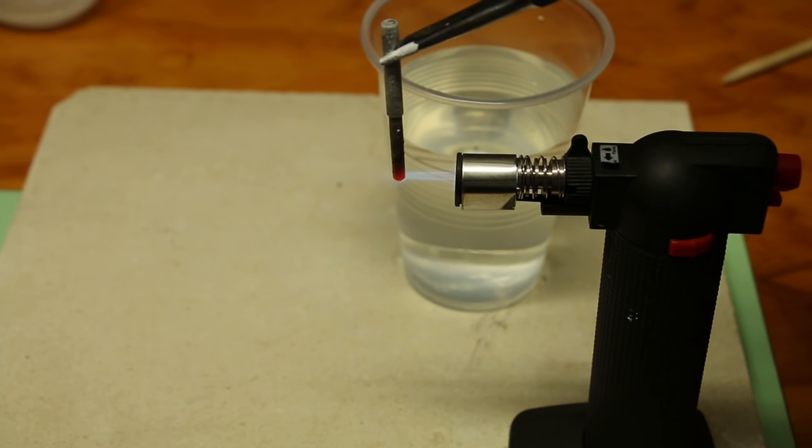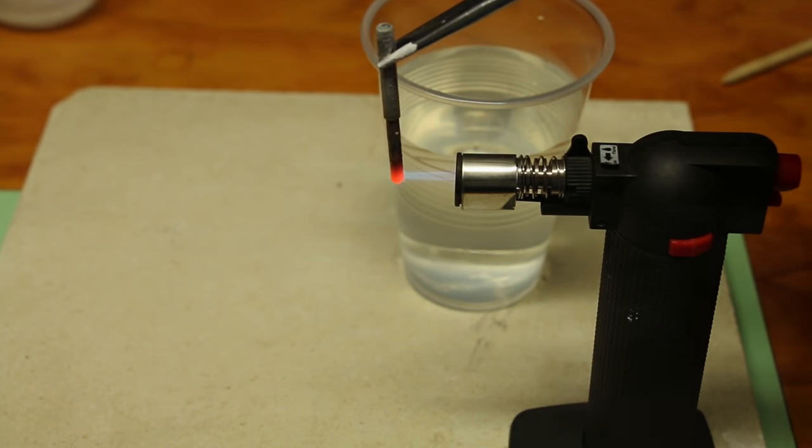This is because when the hot metal hits the water, it creates a layer of steam, which will actually act as an insulator around the steel. And your hardening process won't work properly. So allow the tool to get to a bright red for around a minute or so before quenching.